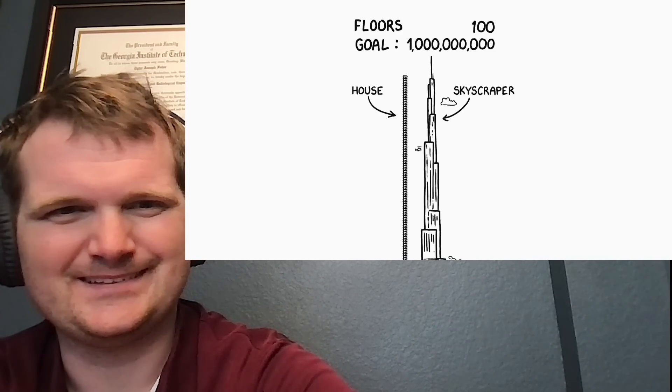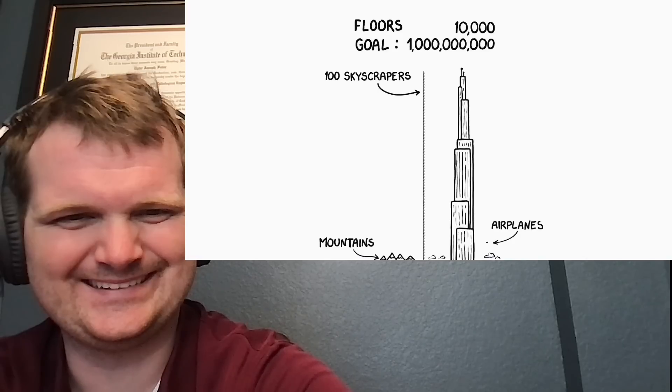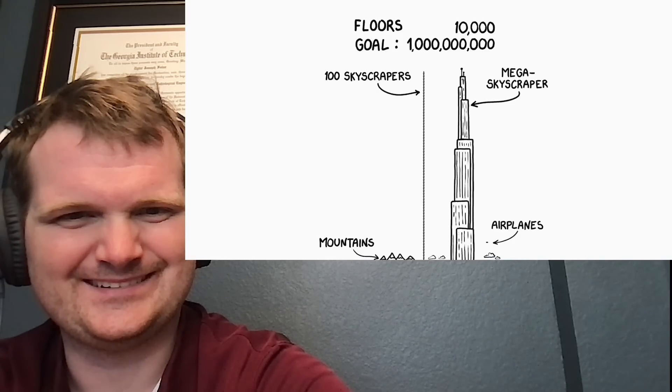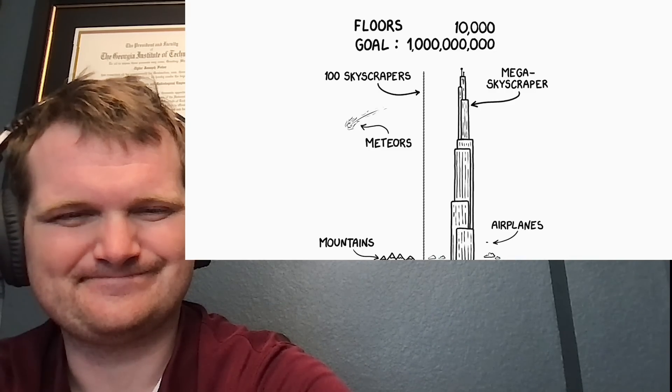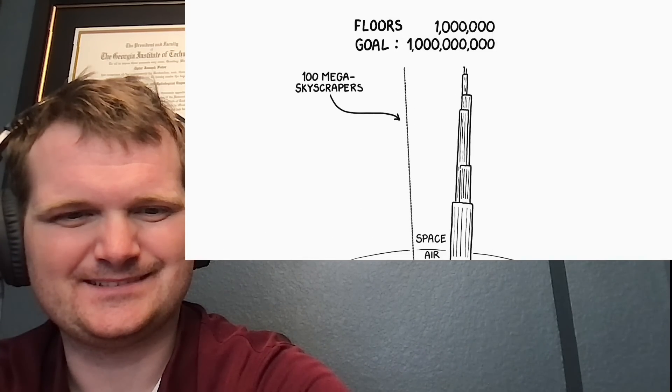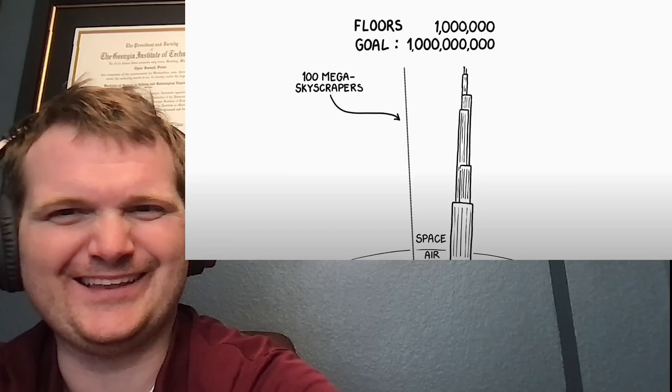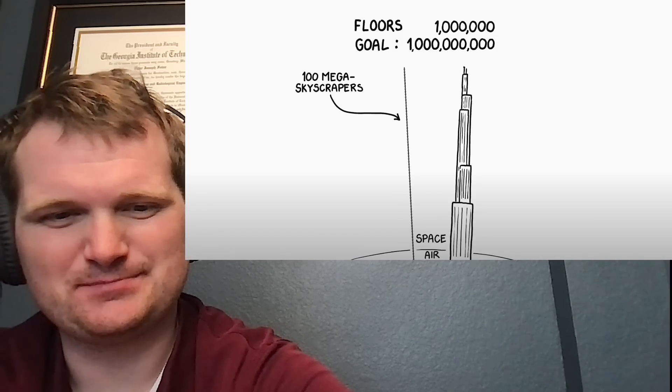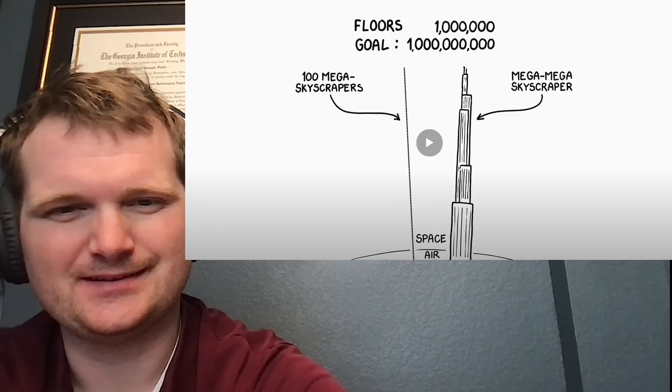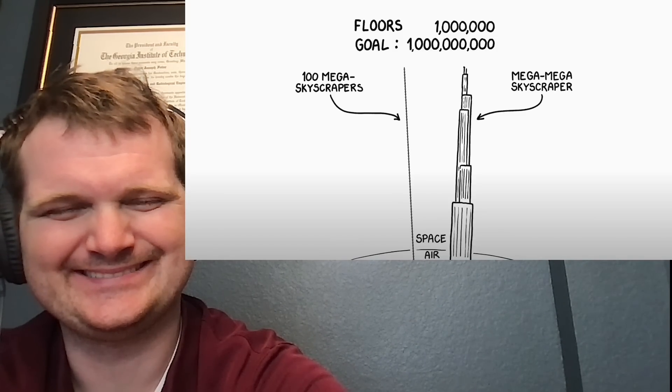A big skyscraper might have about 100 floors which means it's as tall as 100 little houses. If you stacked 100 skyscrapers on each other to make a mega skyscraper it would reach halfway to space. This skyscraper would still only have 10,000 floors which is way less than your billion floors. So let's stack 100 mega skyscrapers. I like the scale of that. Oh yeah look how small the gap between space and air is.